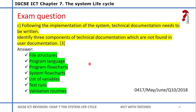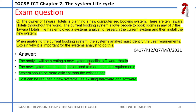Following implementation of the system, technical documentation needs to be written. Identify three components of technical documentation which are not found in user documentation — essentially the differences between technical and user documentation. You could include: file structures, programming language, program flowcharts, system flowcharts, list of different variables, test runs, how to run the system, and validation routines. These are things that go into the technical documentation.